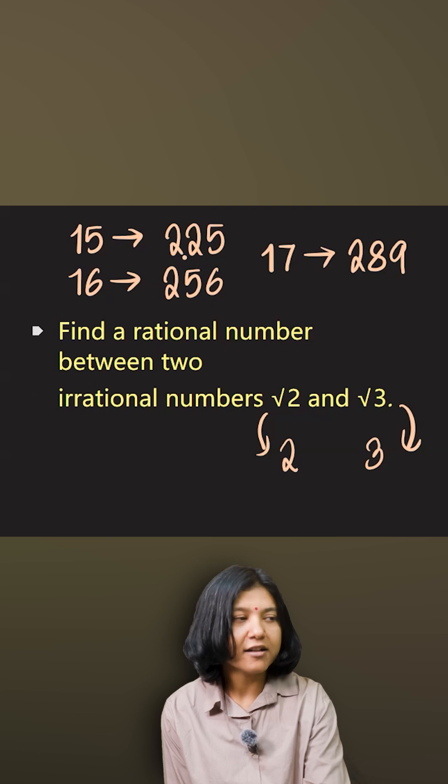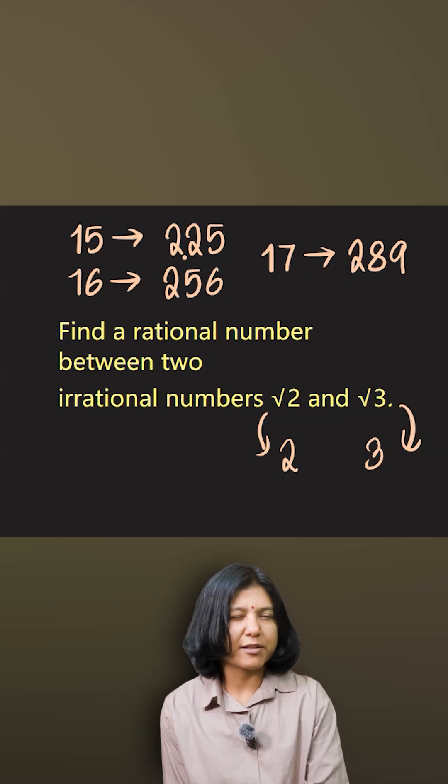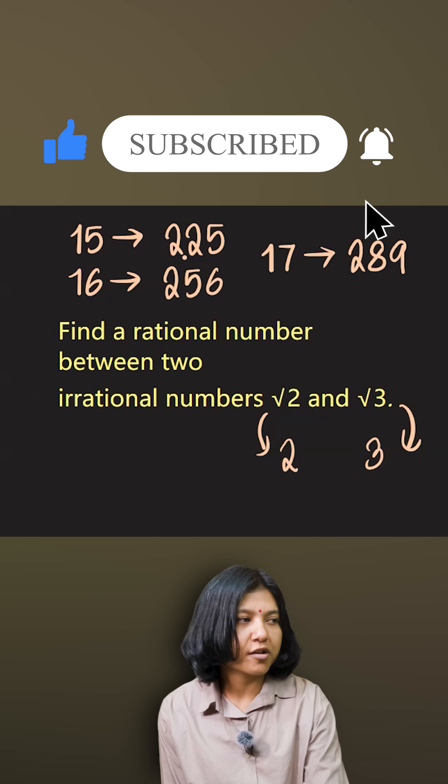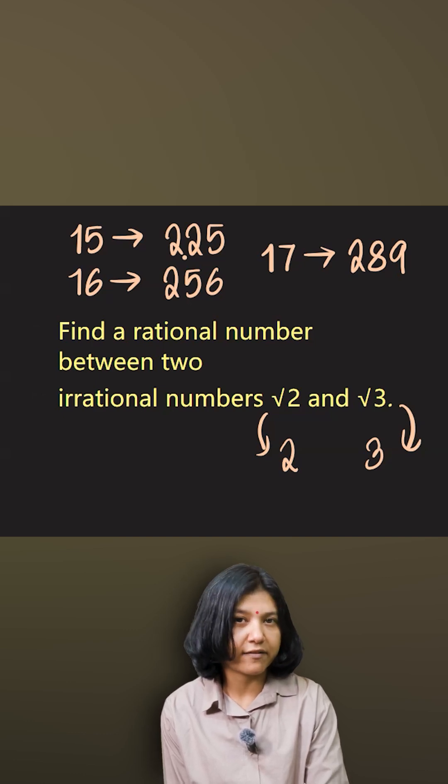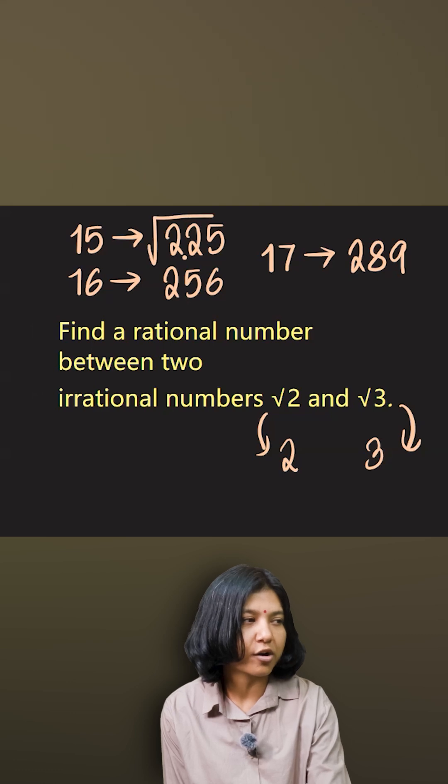Yeah, 2.25. So 2.25 is the number that I can think between 2 and 3. And the square root of that—because note that 2 and 3 are not the actual numbers we are finding, we are finding for √2 and √3—so we have to take the square root of the values.